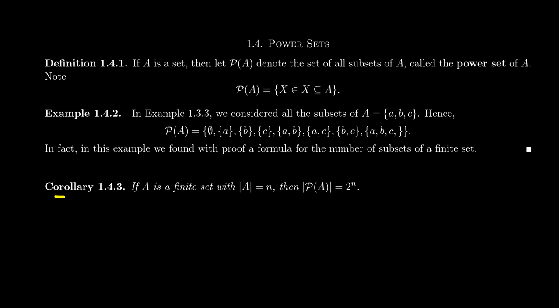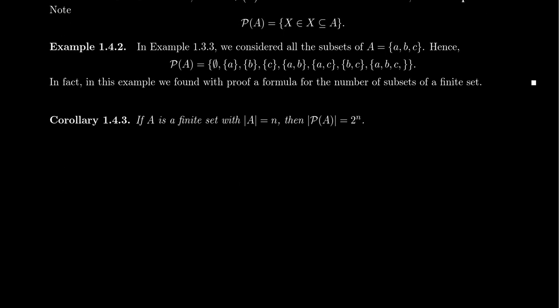And so an immediate corollary of the proof we did in that example is the following. Remember, a corollary is a theorem whose proof is immediate from something you've already done. In which case, when we counted subsets of finite sets and recognizing the power set is just the set of subsets, we then immediately get that if A is a finite set whose cardinality is n, then the cardinality of the power set is going to be two to the n.